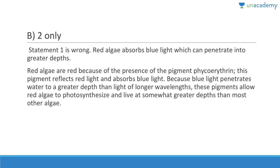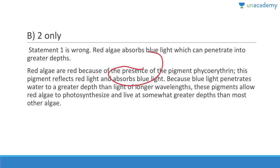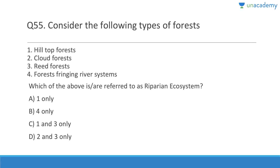Question 54: Red algae absorb red light to photosynthesize — wrong. They live in deep sea water — correct. Answer is B, option 2 only. Red algae absorb blue light and reflect red light. They are red because of the pigment phycoerythrin, which reflects red light. Because blue light penetrates water to a greater depth than light of longer wavelengths, these pigments allow red algae to photosynthesize and live at greater depths than most other algae.